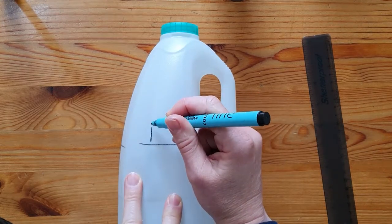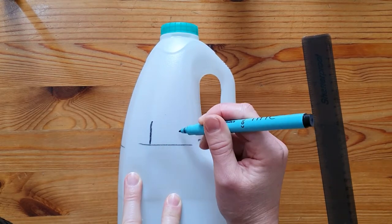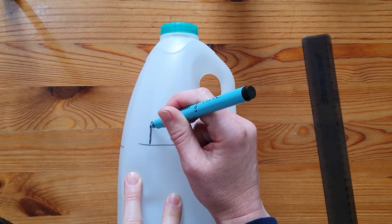Draw a curve each side which will be the shape between the front and back legs.